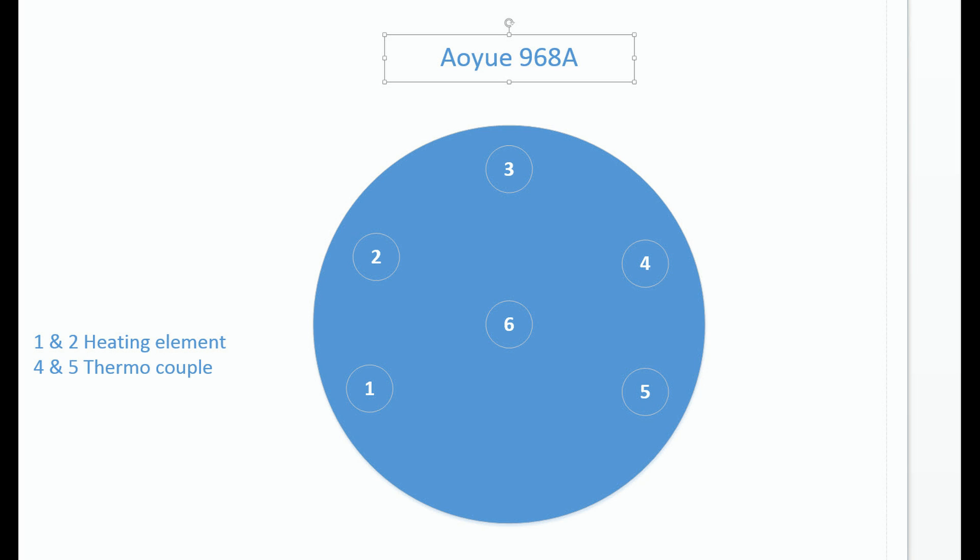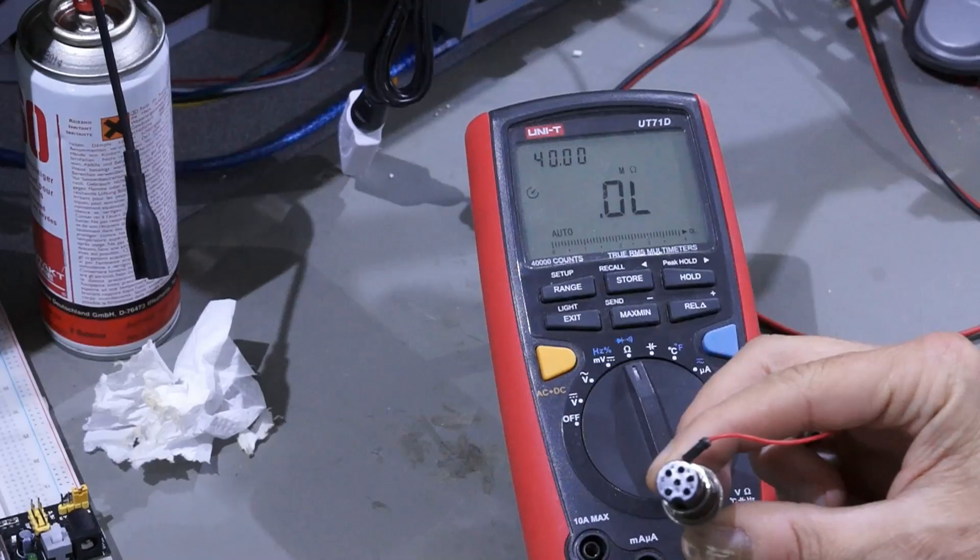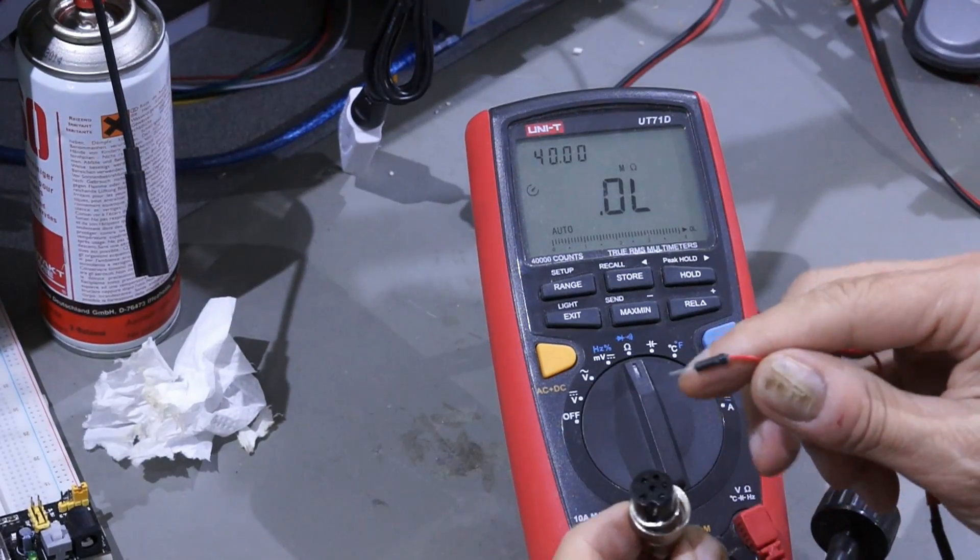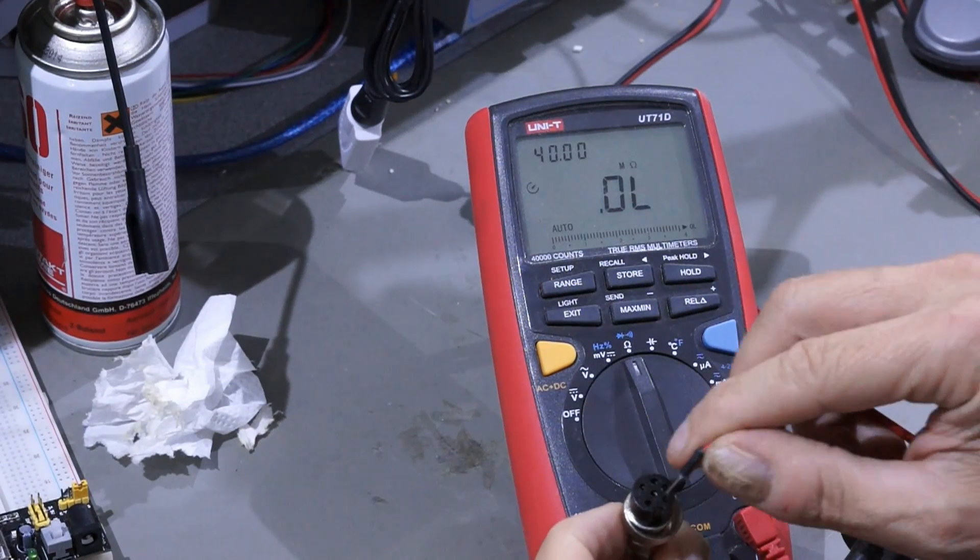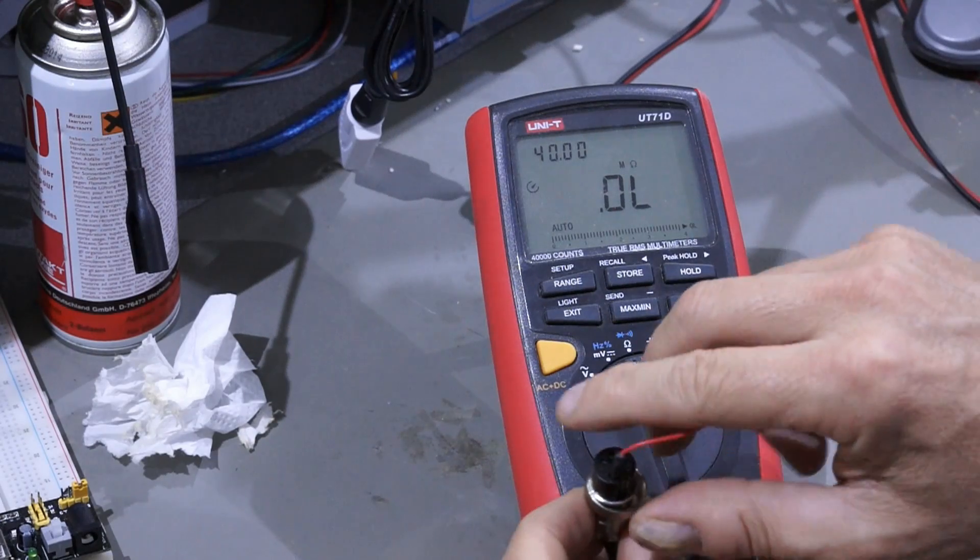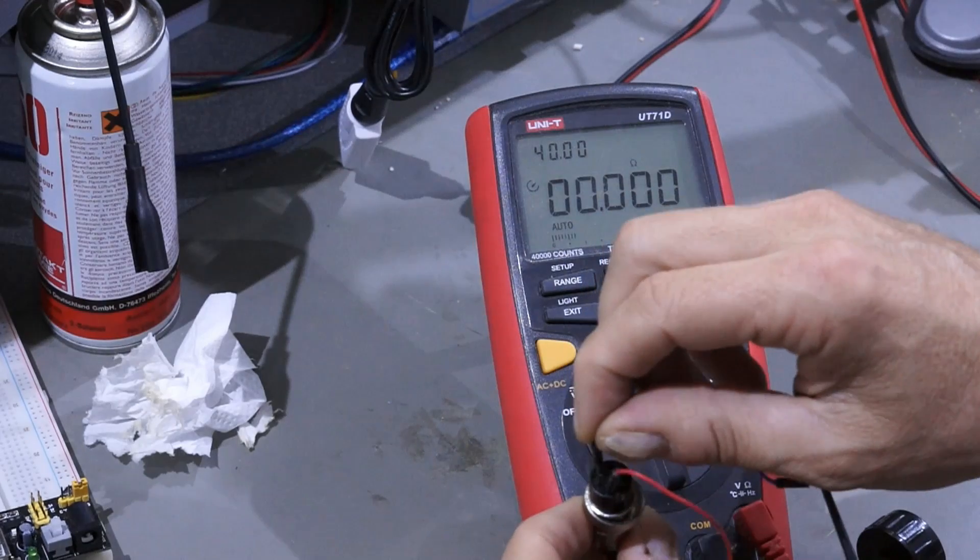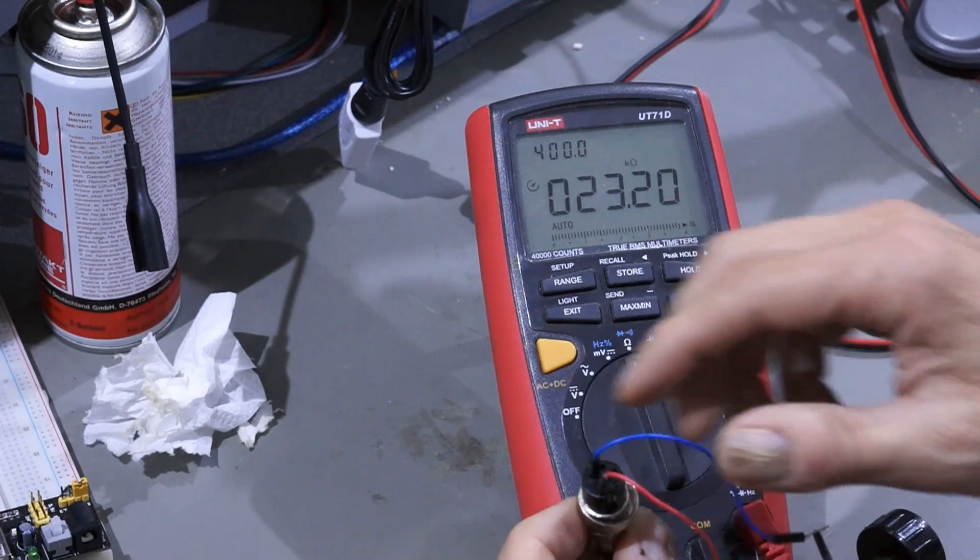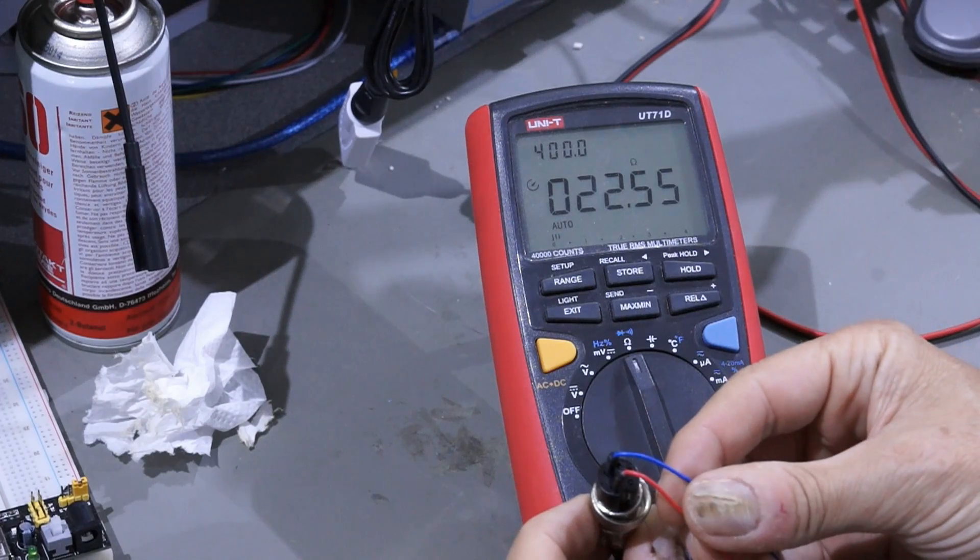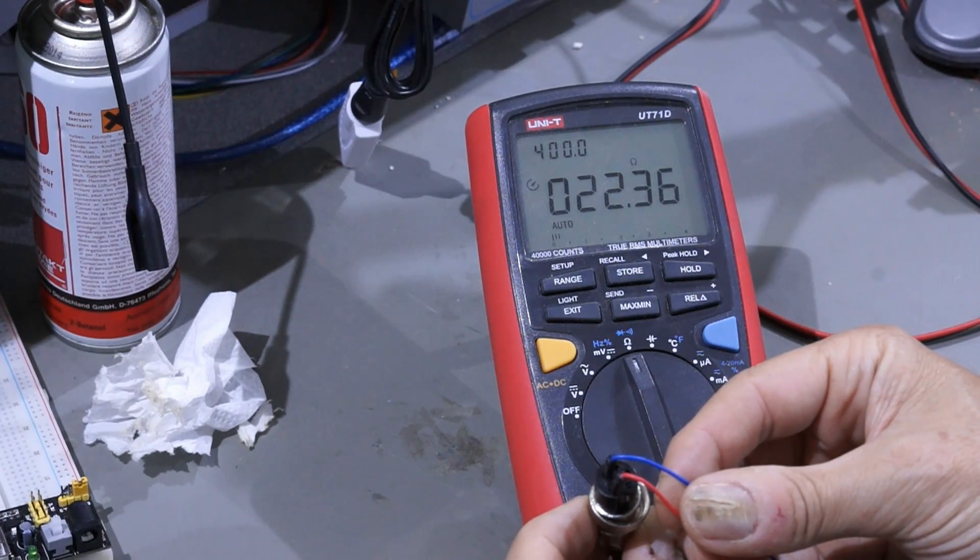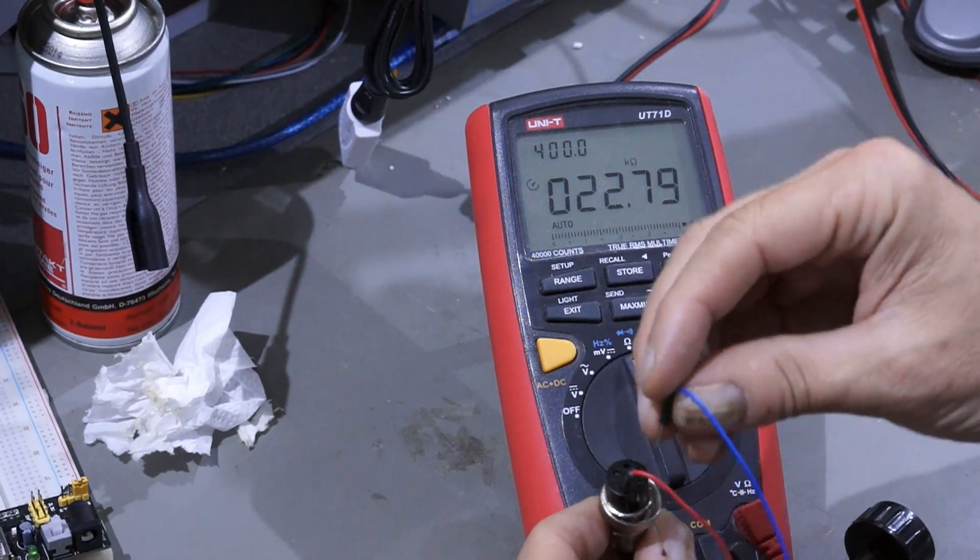The pins of my AOUE 968A station are shown in this diagram. You can check the connections with a multimeter. Between pins 1 and 2 you should find the thermocouple, and between 4 and 5 the heating element. Both resistances should be small. If not, it's worthwhile to go to the next step.